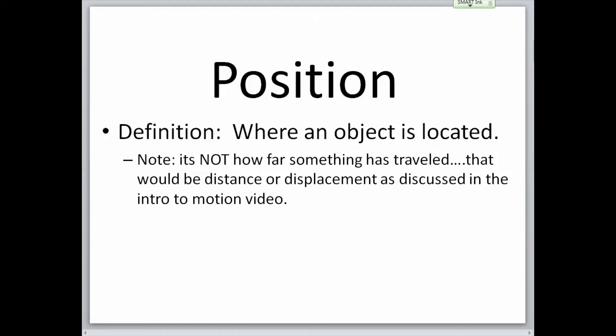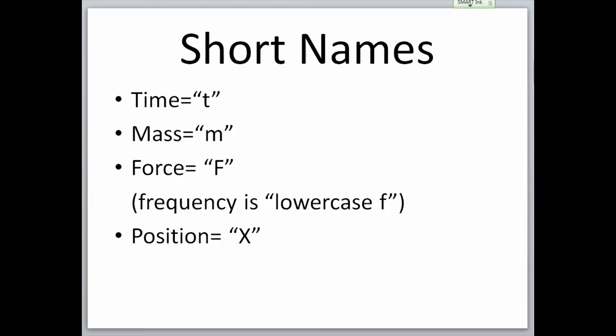In physics, we like to abbreviate things to make life simpler. So, time would be abbreviated as T, mass is shortened to just M, force is written as a capital F, and position, well, position is slightly different. We shorten position to be the letter X.